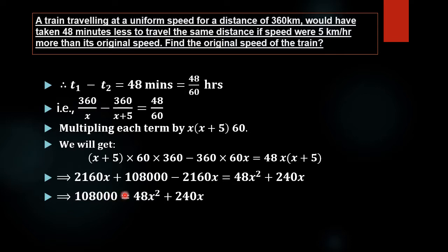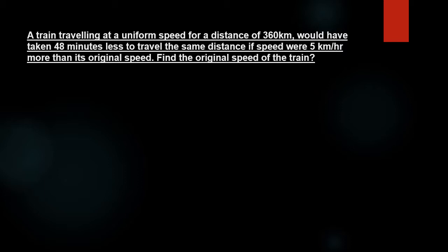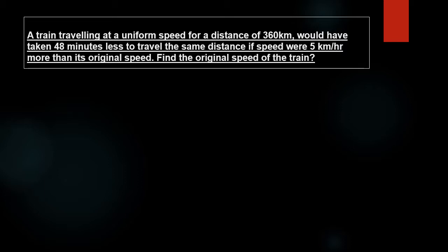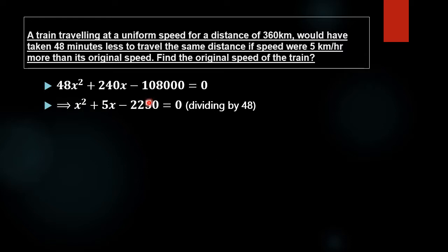Taking 10800 to the right side, we get 48x squared plus 240x minus 10800 equal to 0. Since 48 is common to all three terms, dividing by 48, we get x squared plus 5x minus 2250 equal to 0.